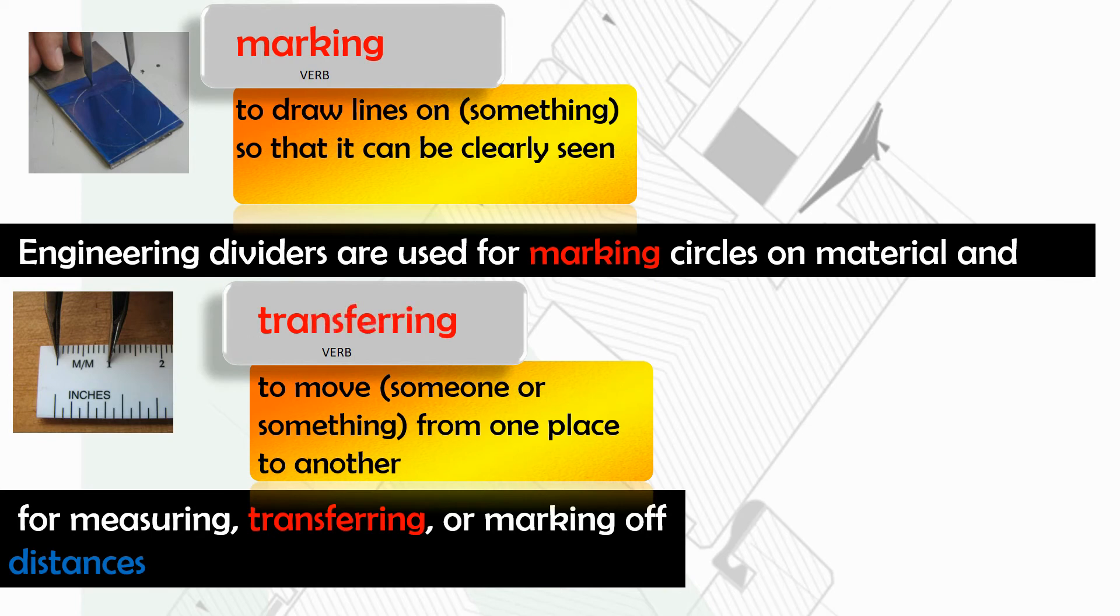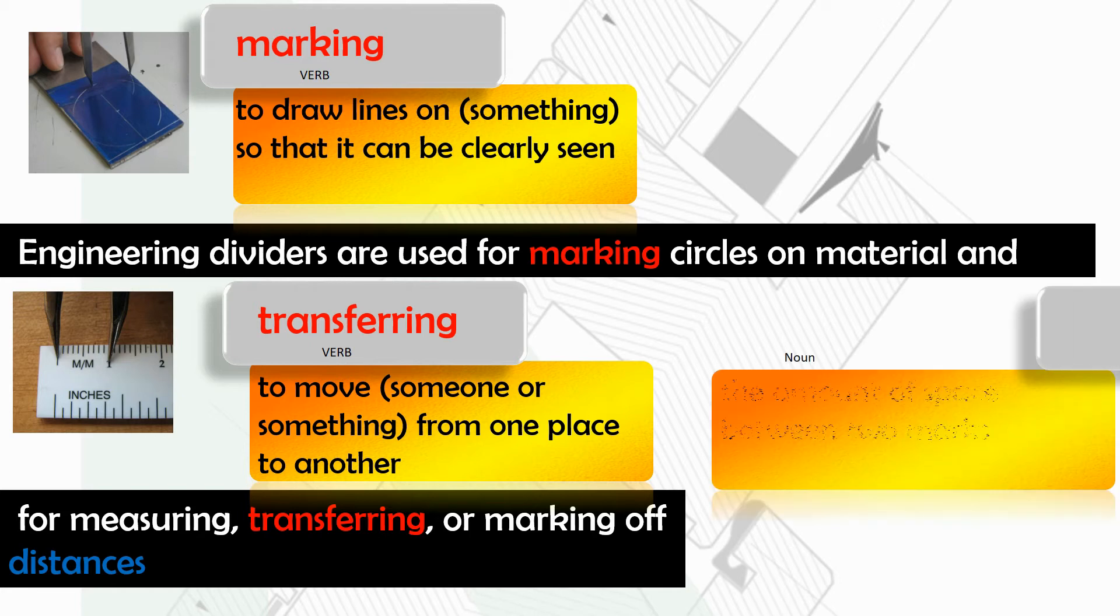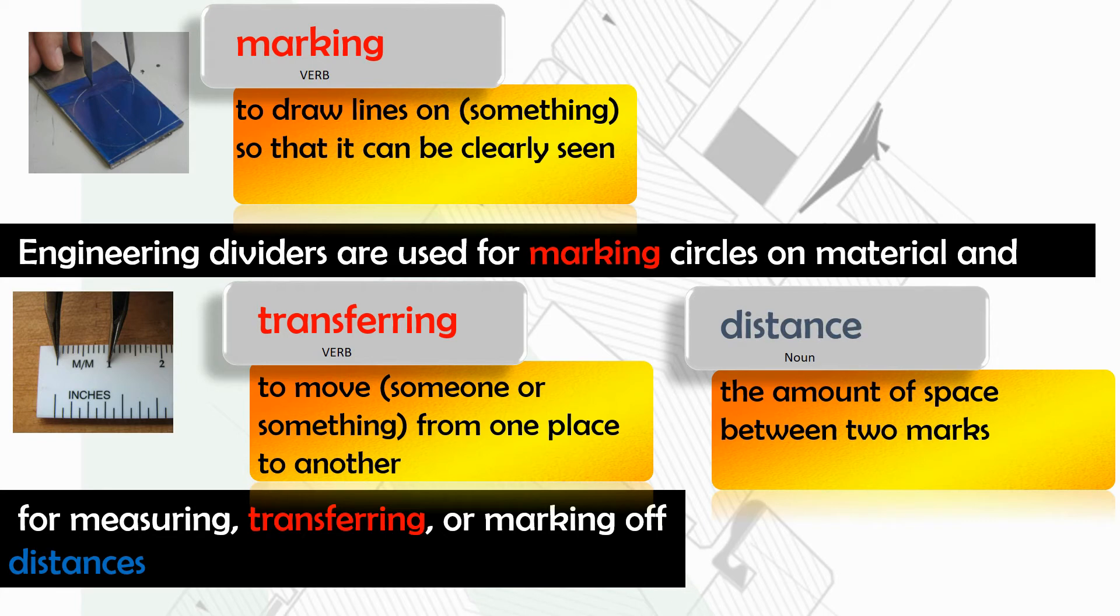Transferring means to move someone or something from one place to another. And in this case with dividers, we're moving the measurement from the ruler to the workpiece. Distance is the amount of space between two marks.